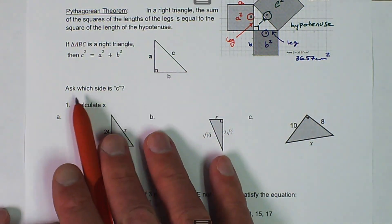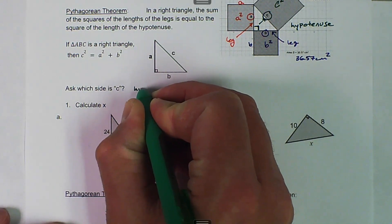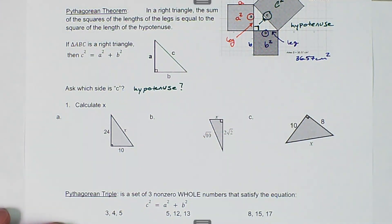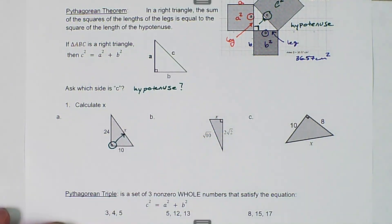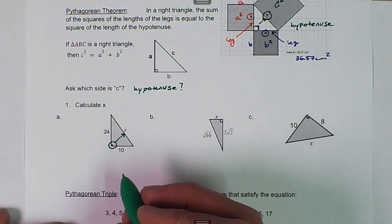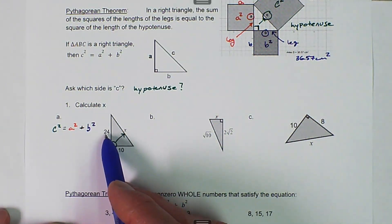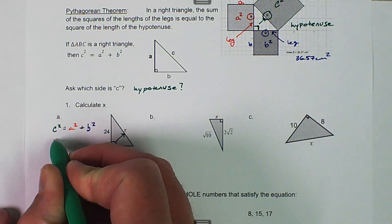We're looking at a couple of examples. The first question you need to ask is: which side is C, or which side is the hypotenuse? The examples say to calculate for X. Here's the 90-degree angle — a little box in the corner — so our hypotenuse is opposite that angle. We write C squared equals A squared plus B squared, and our hypotenuse is going to be X squared.